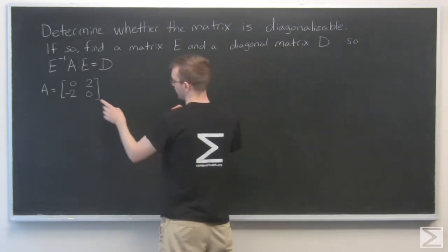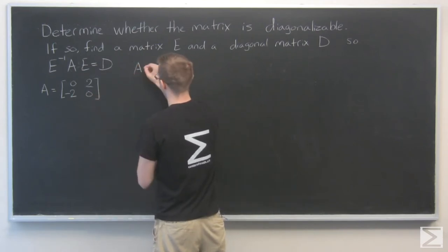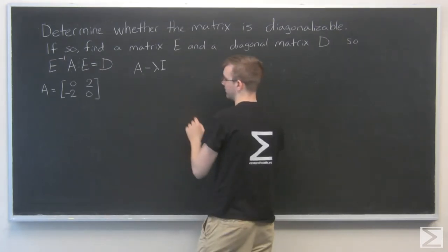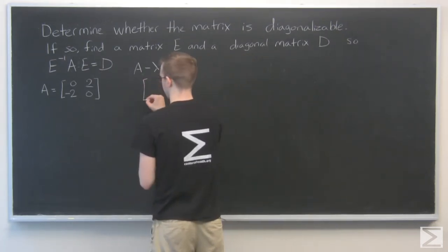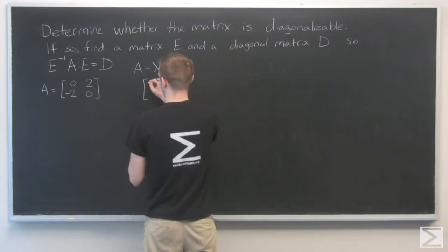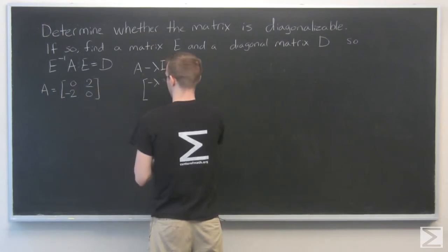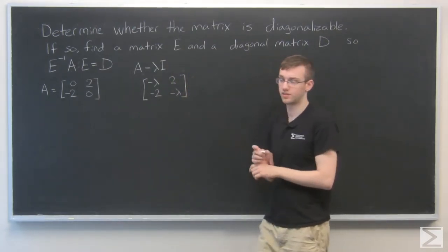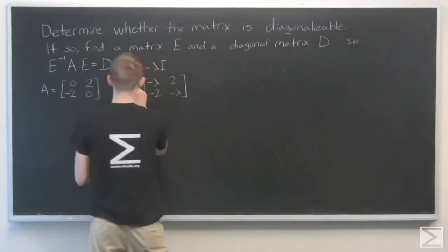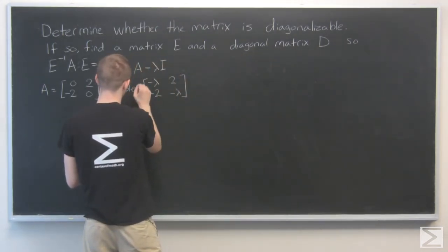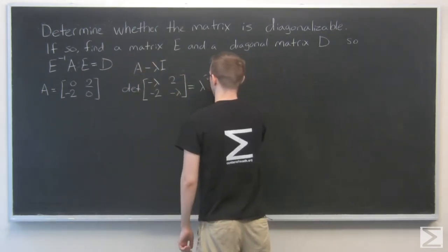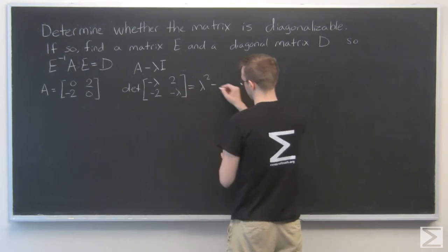So here we have, we're going to look at the relationship of A minus lambda I. For that matrix, for matrix A, that's going to look like negative lambda, 2, minus 2, and negative lambda. Now we want to find the determinant of this and see what those eigenvalues are. So just cross multiply. That's lambda squared minus minus 4, so that's plus 4.